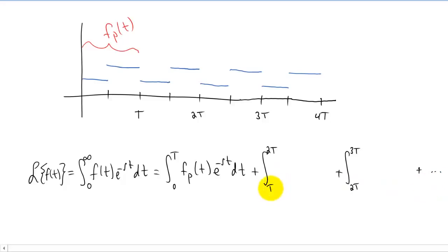Now let's look at this integral from T to 2T. If our function from zero to T was f sub p of t, then the piece of the function from T to 2T that we're integrating here is the same function, it's just shifted to the right by T units. That's capital T units of course.